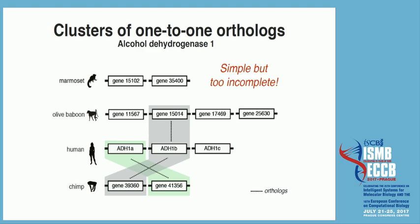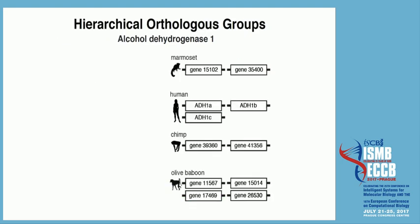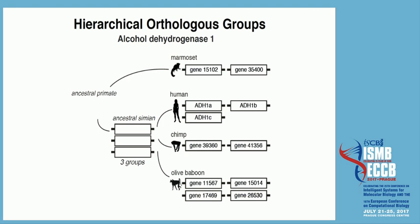The paradigm we've been trying to push in the past few years is that of hierarchical orthologous groups — trying to capture the evolutionary relationship between sequences in terms of key ancestors. Here are all our present-day sequences, and we're going to relate them in terms of ancestors. If we go to the ancestral simian, through sequence analysis we can infer that there were three ancestral copies from which the present-day genes have evolved.